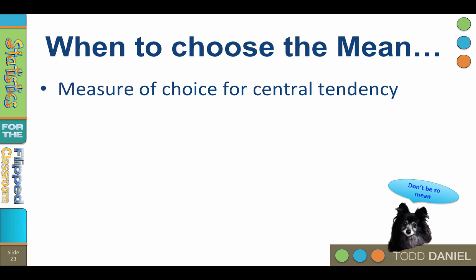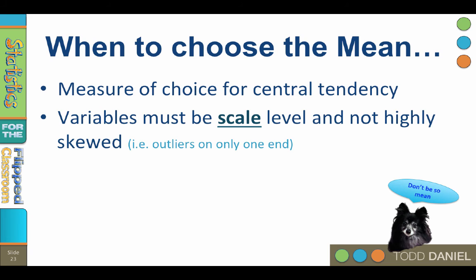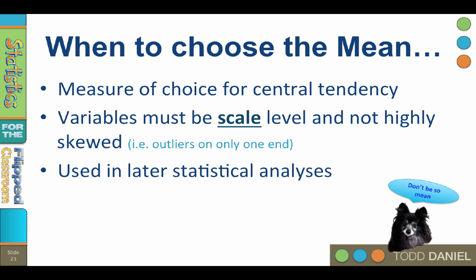The mean is the measure of choice for central tendency. You should report the mean when variables are at the scale level and not highly skewed — in other words, when outliers are on only one end of the distribution creating positive or negative skew. You should also report the mean when you plan on doing additional parametric statistical analyses, such as t-tests, ANOVA, correlation, or regression, since parametric statistics require the use of the mean.